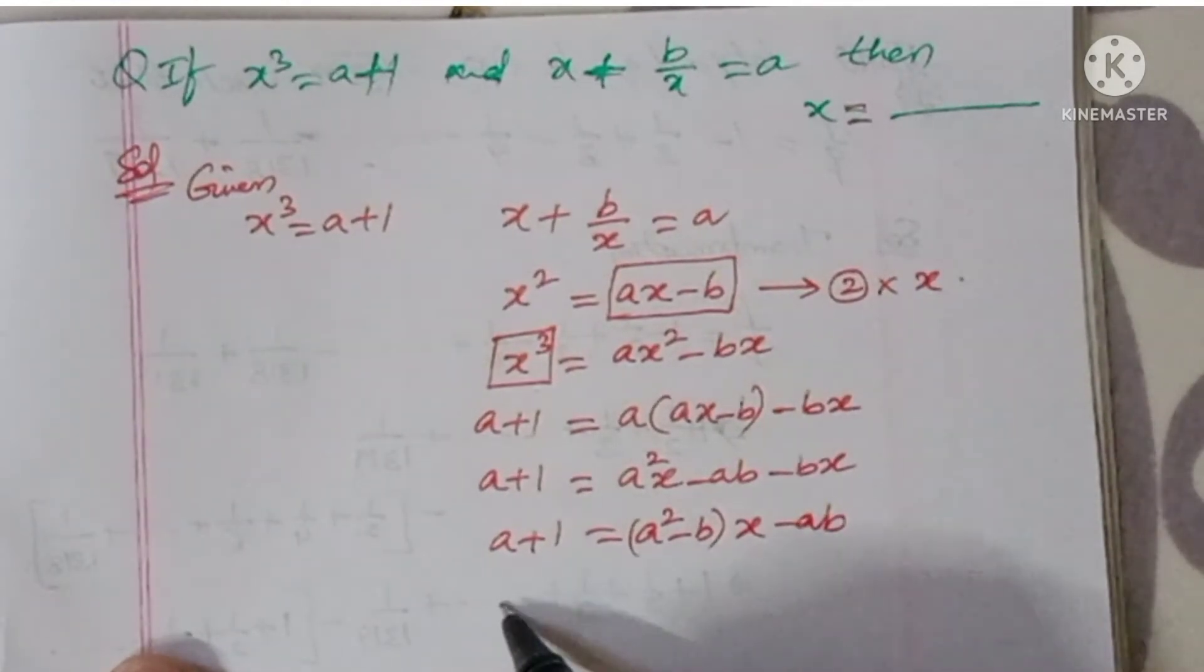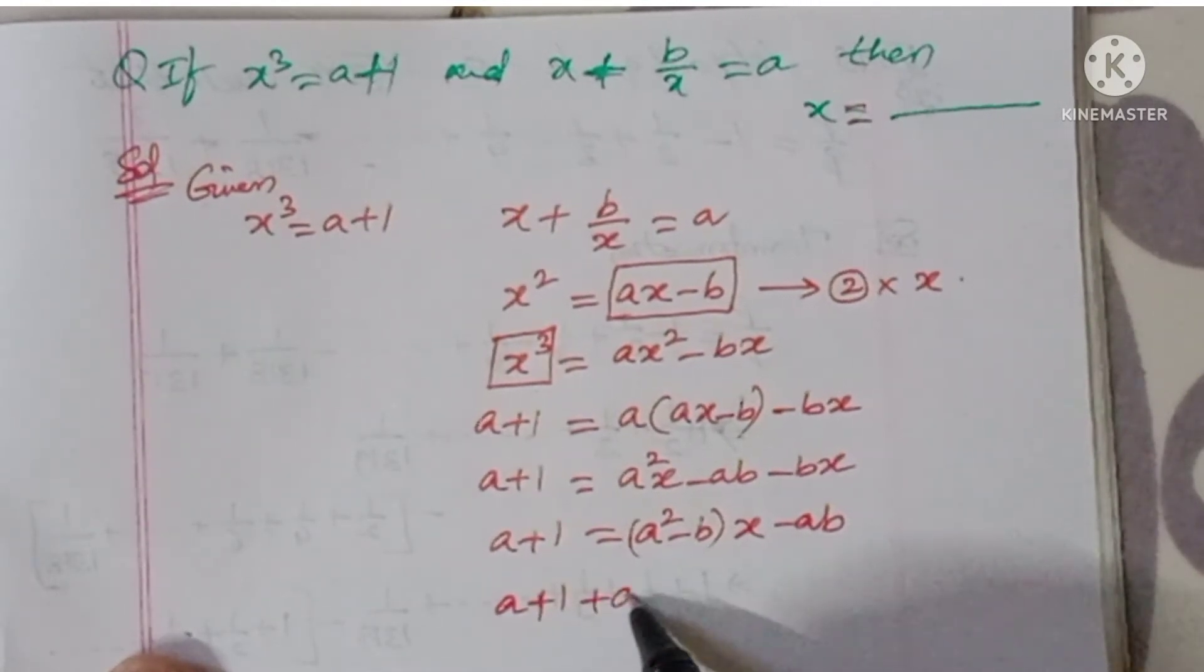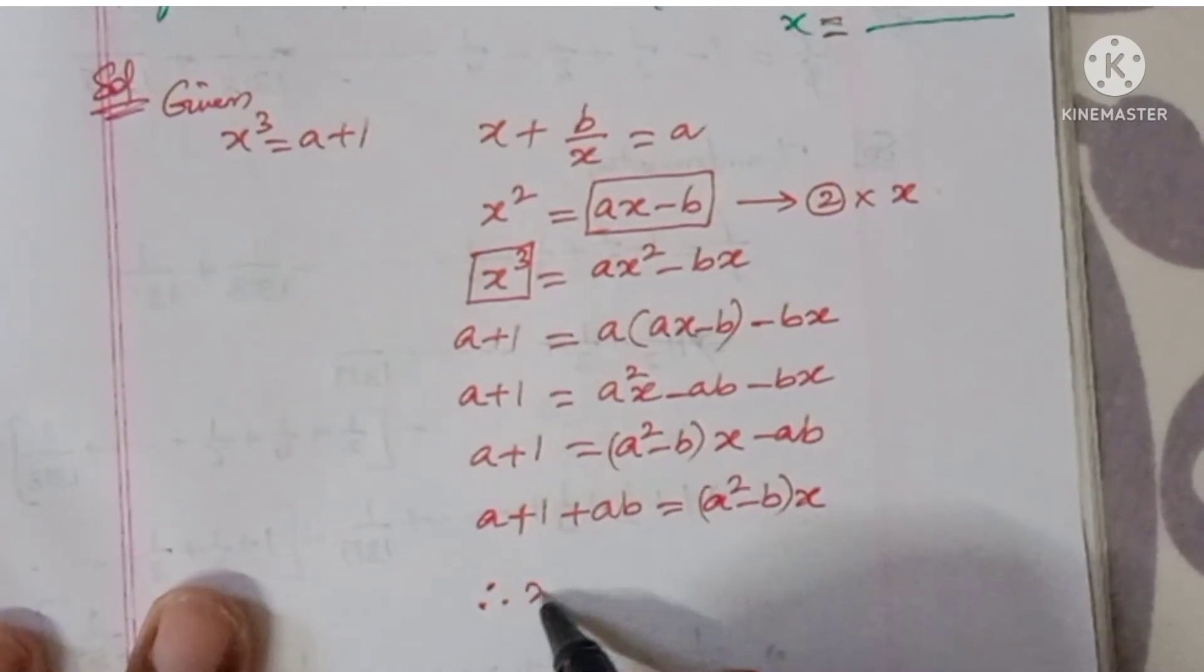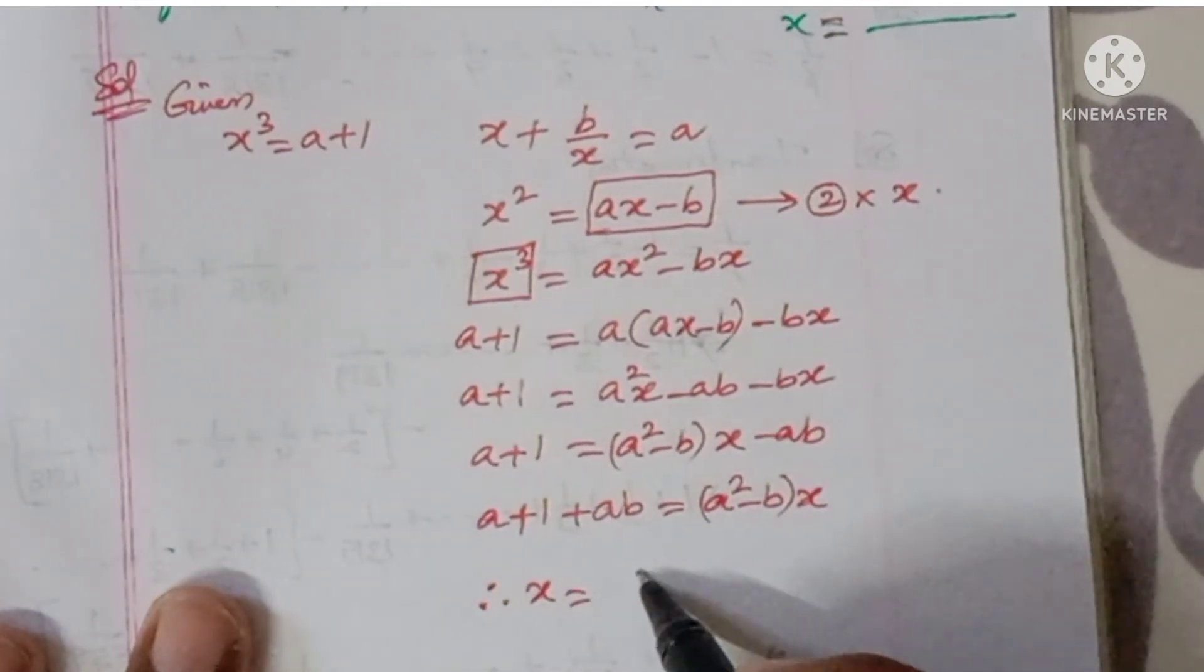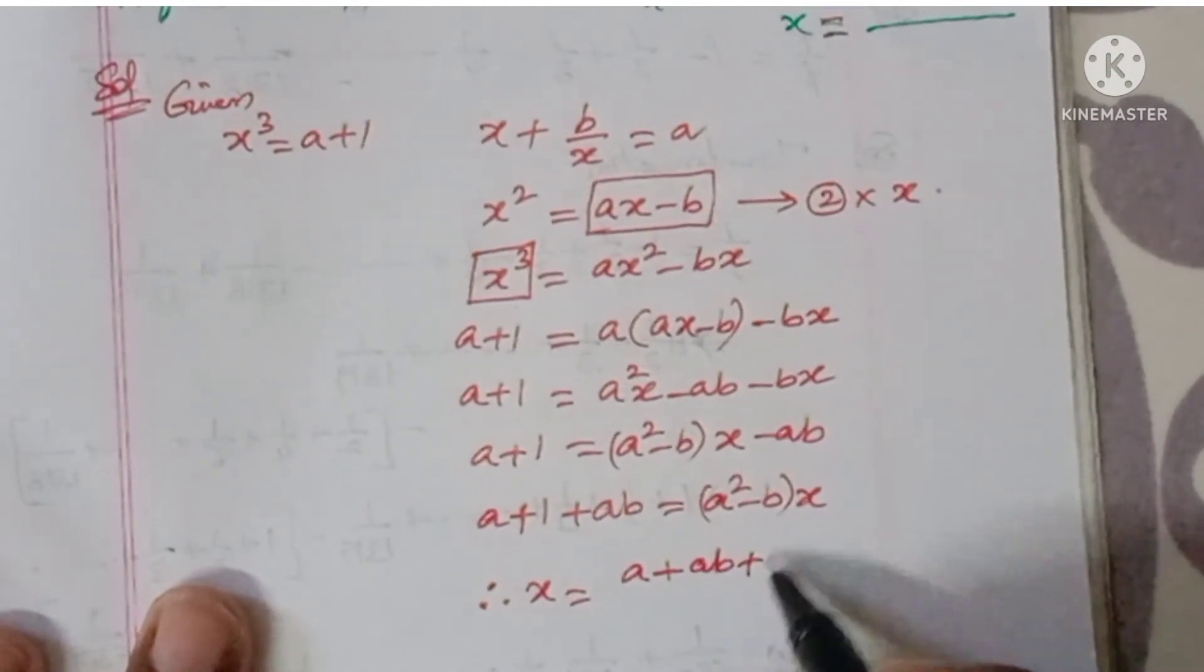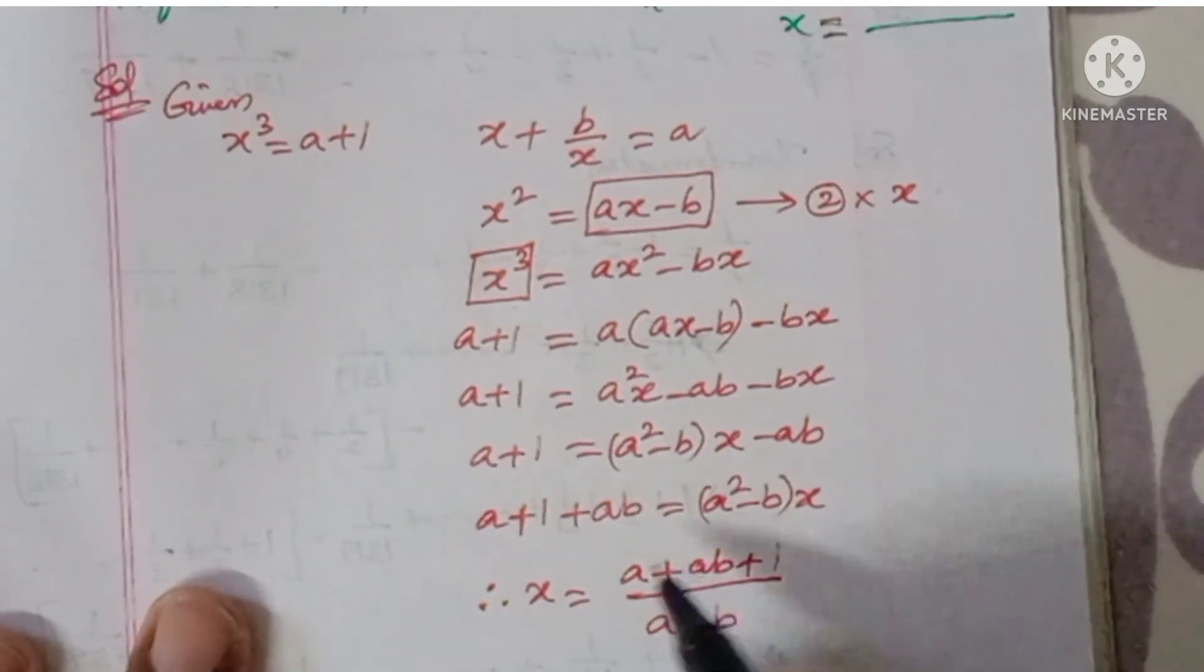So a+1 + ab is equal to (a² - b) into x. Therefore, x is equal to (a + ab + 1) by (a² - b).